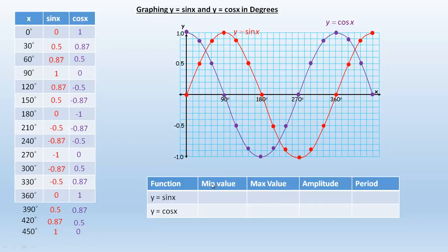Now we're going to talk about the minimum, maximum, amplitude, and period. The minimum value for the sine graph is negative 1 — the lowest value it reaches. The maximum value is positive 1. The amplitude is the distance from the middle axis line to a maximum or minimum, which is 1 unit — so the amplitude is 1. The period is the length of one complete cycle. From 0 to 360 is one full cycle, so the period is 360 degrees. After that, the graph starts to replicate itself again.